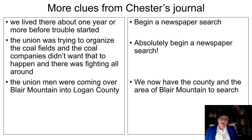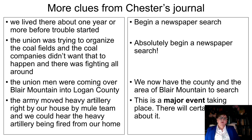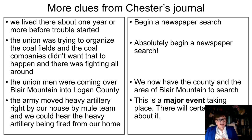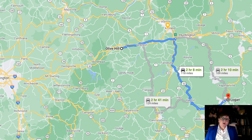The union men were coming over Blair Mountain into Logan County. Now we're being specific — we have the county and the area of Blair Mountain to search. The army moved heavy artillery right by their house by mule team, and they could hear the heavy artillery being fired from their home. This is a major event; there will certainly be news about it. With the army involved, heavy artillery, and union men, this is not just local West Virginia news — this is national news. They had moved from Olive Hill over to Logan, about just over two hours by today's roads, but this was 1919–1920 and they traveled by rail in a boxcar.